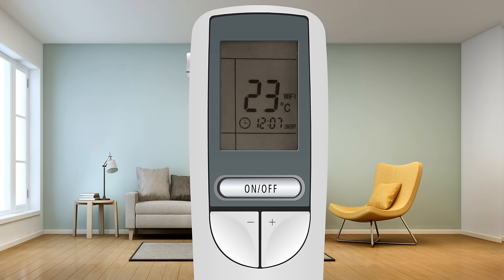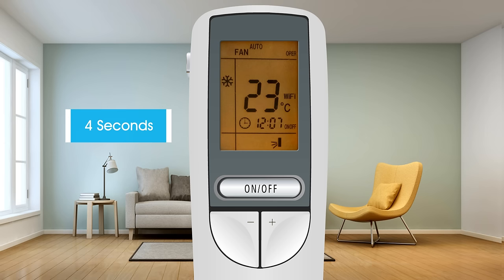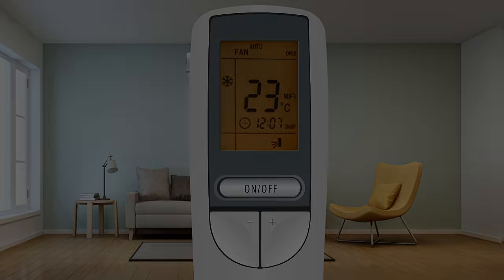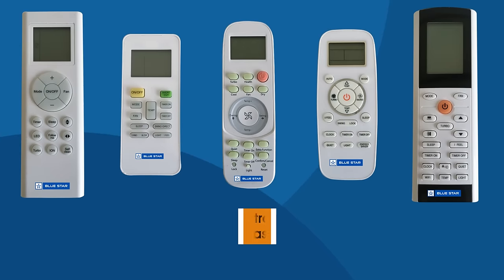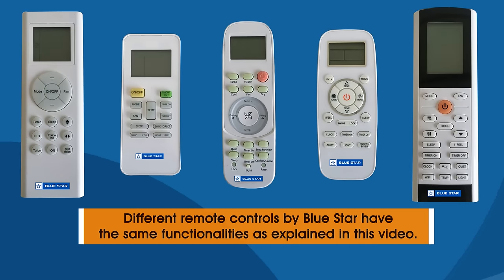Backlighting: when you switch on the AC, the backlight can be seen for 4 seconds before it goes off. It is seen for 3 seconds each time the light button is pressed thereafter. We have now seen all the buttons on the AC remote and their functionality. We hope this video will help you understand and use the remote more efficiently.